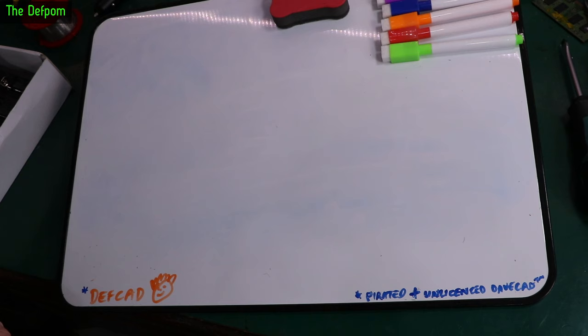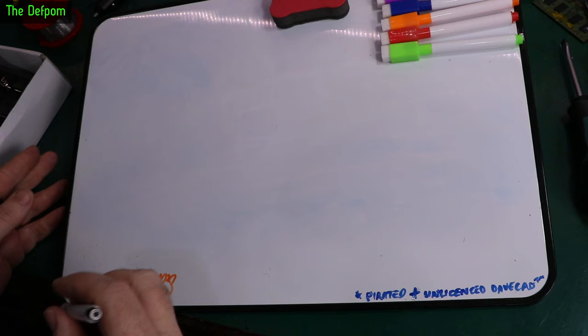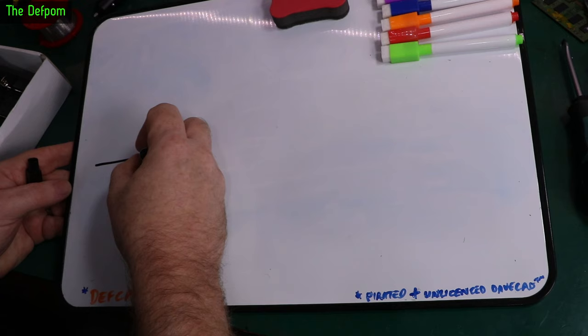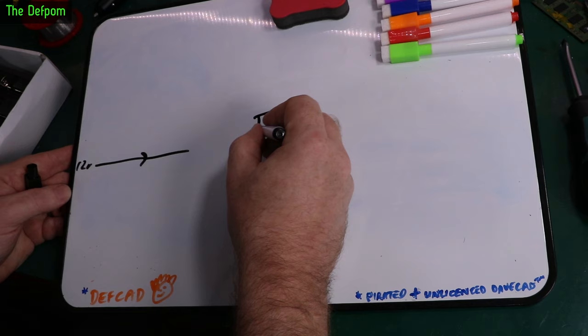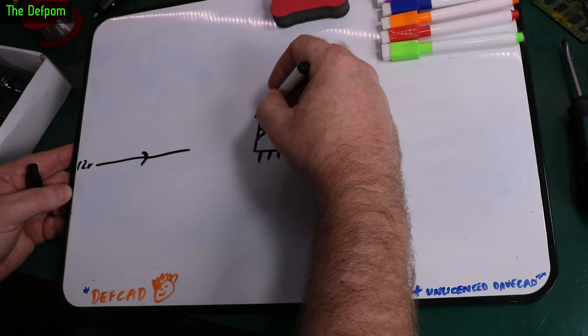Welcome to my DevCAD, which is a pirated version of DevCAD. Don't tell Dave. So let's just quickly draw this circuit out. We've got a simple circuit coming in, right? So we've got 12 volts coming in. 12 volts coming in, right? Or thereabouts. We've got a chip like this, which is really badly drawn, because I'm with turbo drawing and stuff like that. And we've got all these pins.